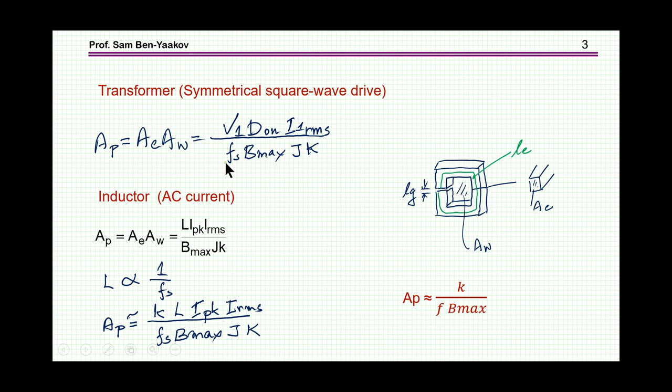K=1 means we can fill all the window with copper, which is impossible. Normally K will be a smaller number like 0.7 or 0.5. Obviously the area product is inversely proportional to F Bmax, so the larger this value the smaller will be the core.